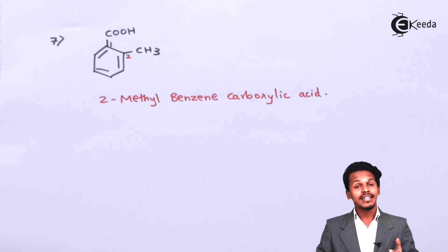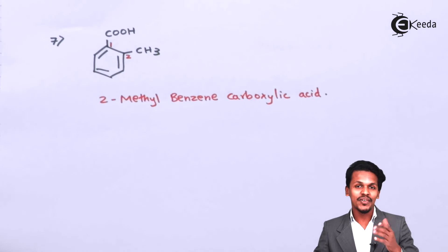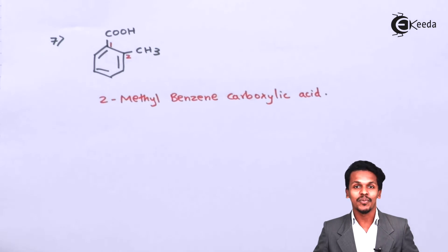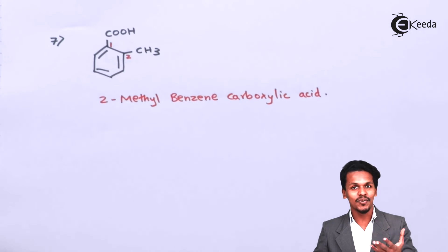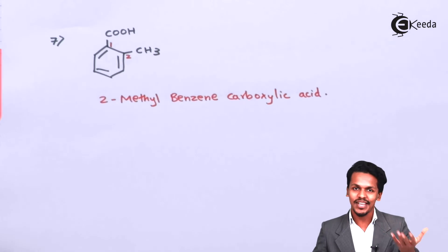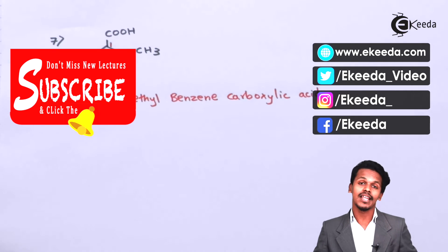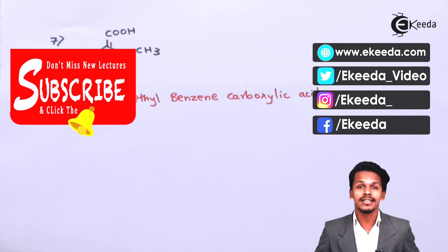Thank you for watching this video. I hope you understood how to give IUPAC nomenclature to compounds that are carboxylic acids. I hope to see you next time — don't forget to subscribe to the Eekira channel.